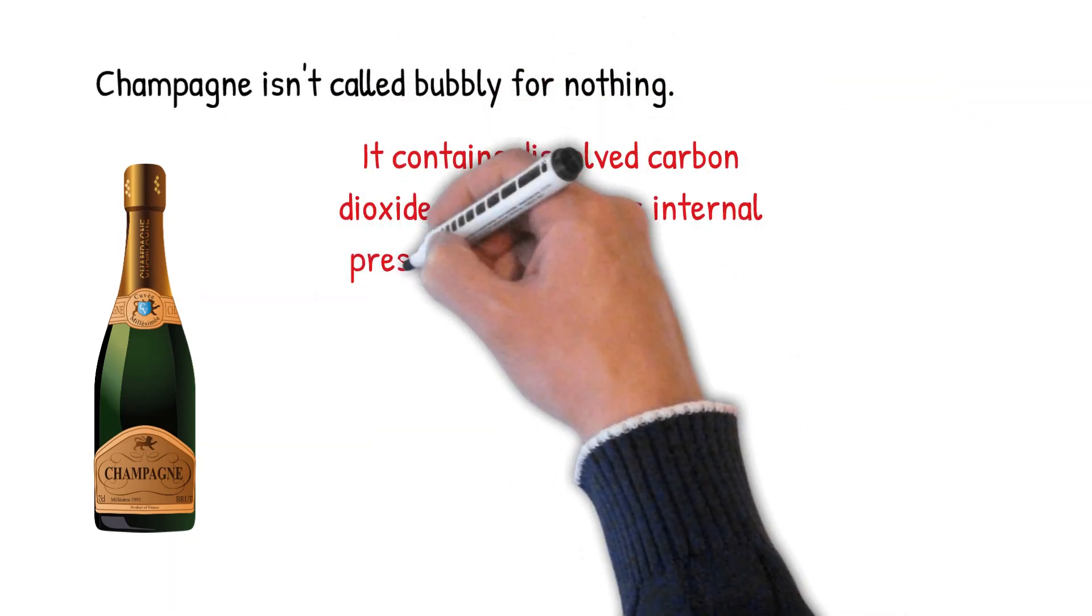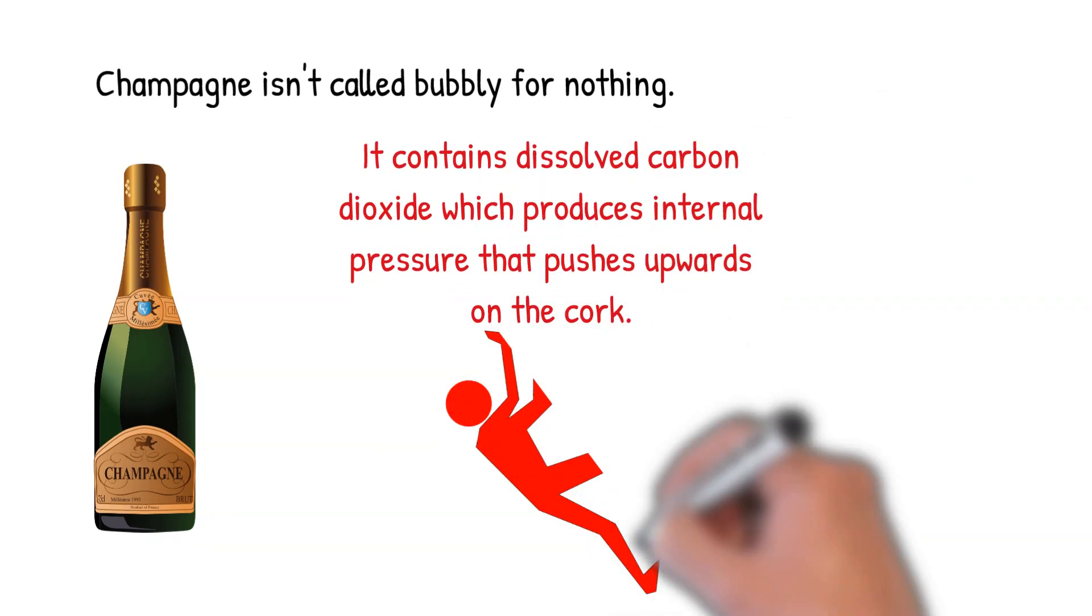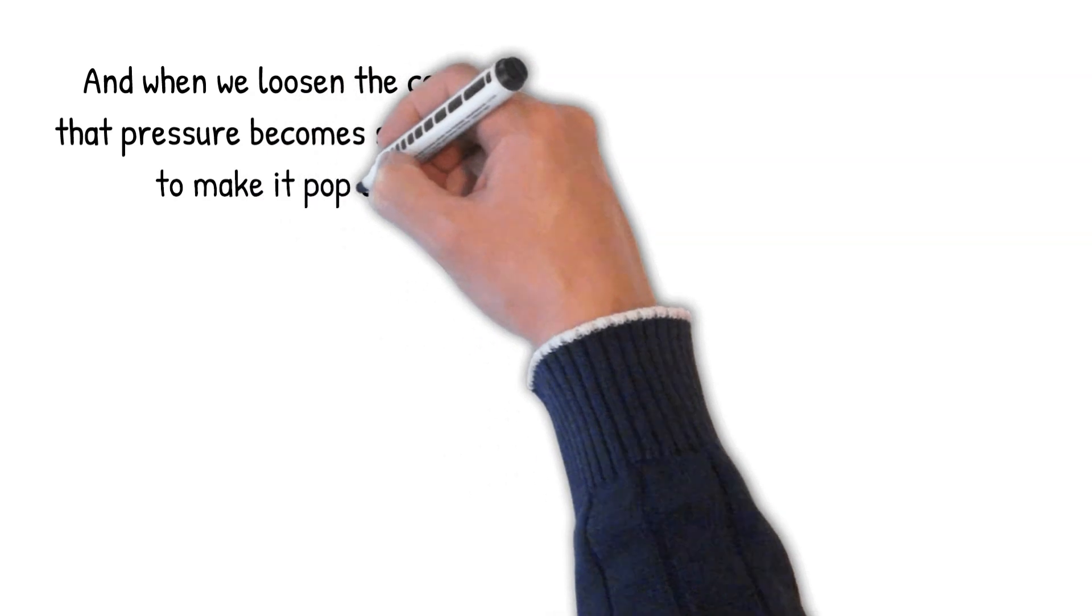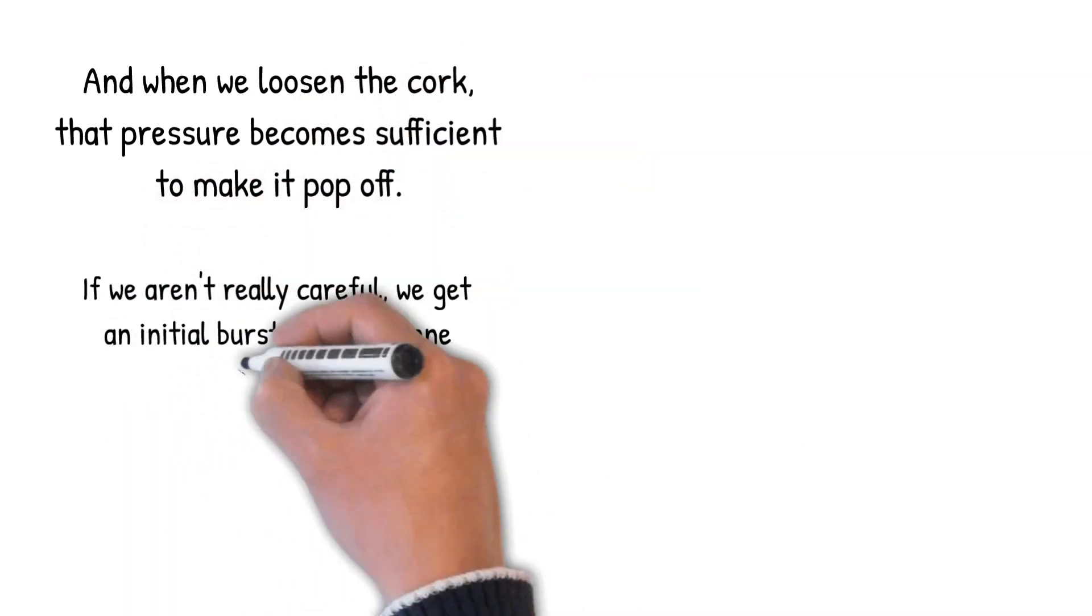And this produces the bubbles, but it also produces an internal pressure that is always pushing upwards on the cork. When we loosen a cork in a champagne bottle, that pressure becomes sufficient to make the cork pop off.